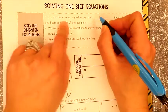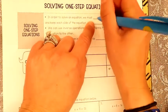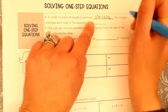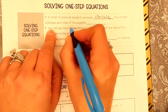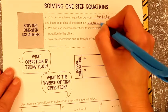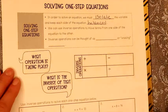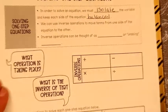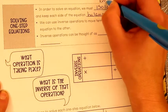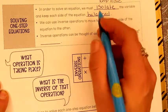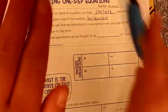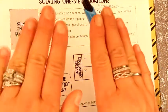So let's start filling this out. In order to solve an equation, we must isolate the variable and keep each side of the equation balanced. You guys know what isolate means? To keep alone. And balance, you know, like a teeter-totter or a scale. They have to be on even playing grounds.